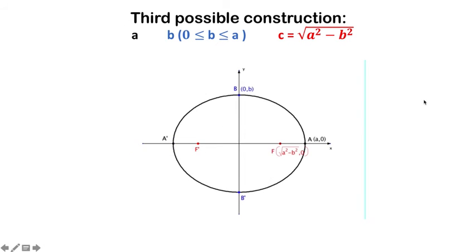And at last the third possible construction is obtained in fixing a, b is the parameter between 0 and a, to be sure to obtain the ellipses which principal axis is horizontal here, and c constrained by this formula.